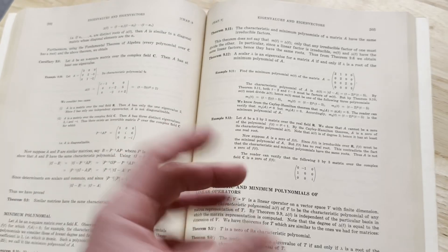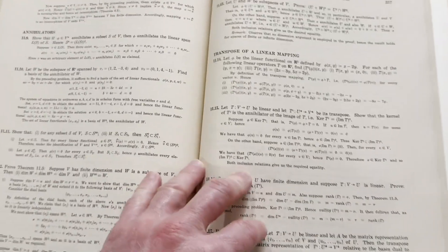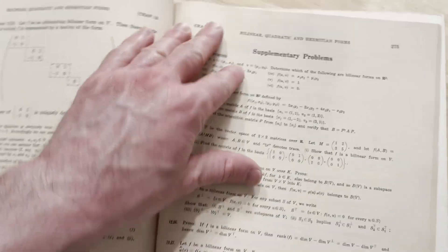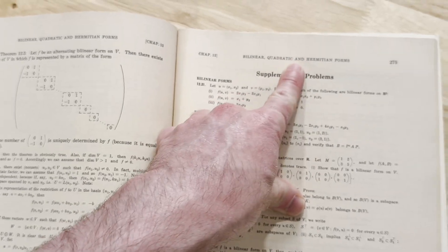It'll have things that you don't do in class. For example, let me just find something. Like here, this bilinear quadratic Hermitian forms. You might not do that in your linear algebra classes, right? You just might not do it. You might take two courses in linear algebra and not do it.